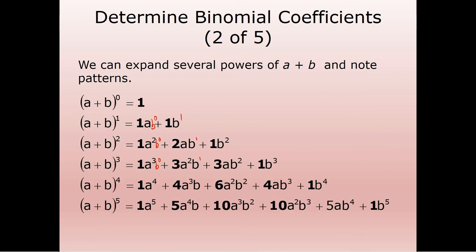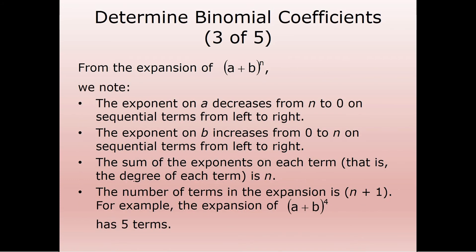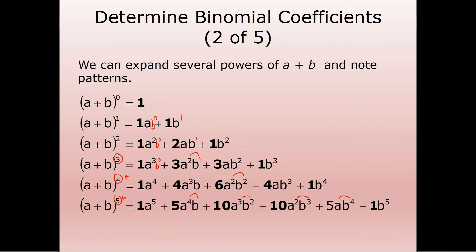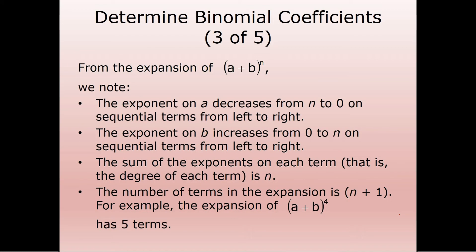Notice also that the sum of the exponents — for example, two plus one is three, two plus two is four — they're always going to add up to the power. They're always going to add up to five for a fifth power, four for a fourth power. We're also going to notice that the number of terms in the expansion is always one more than the exponent. So if the exponent is zero, there's one term; exponent is one, there are two terms; exponent is five, there are six terms.